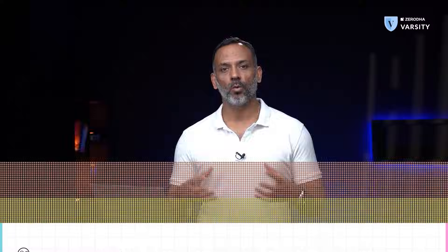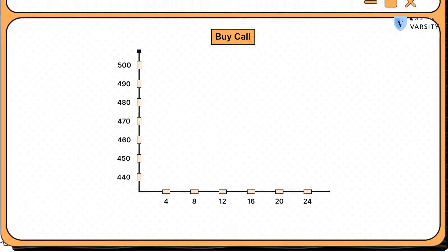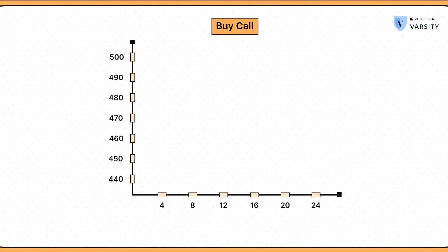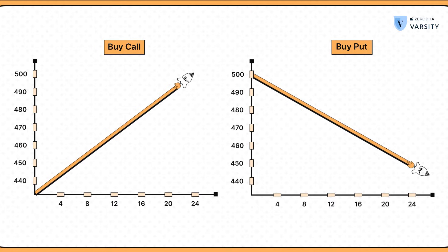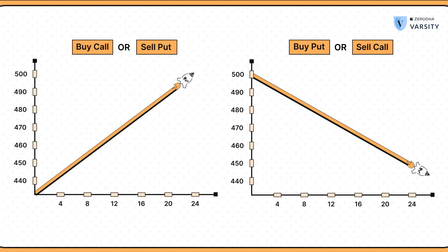Now here's something I want you to remember. You buy a call option when your point of view is bullish. You buy a put option when your point of view is bearish. Alternatively, if your point of view is bullish, you can also sell a put option. And when you're bearish on a stock or an underlying, you can sell a call option.